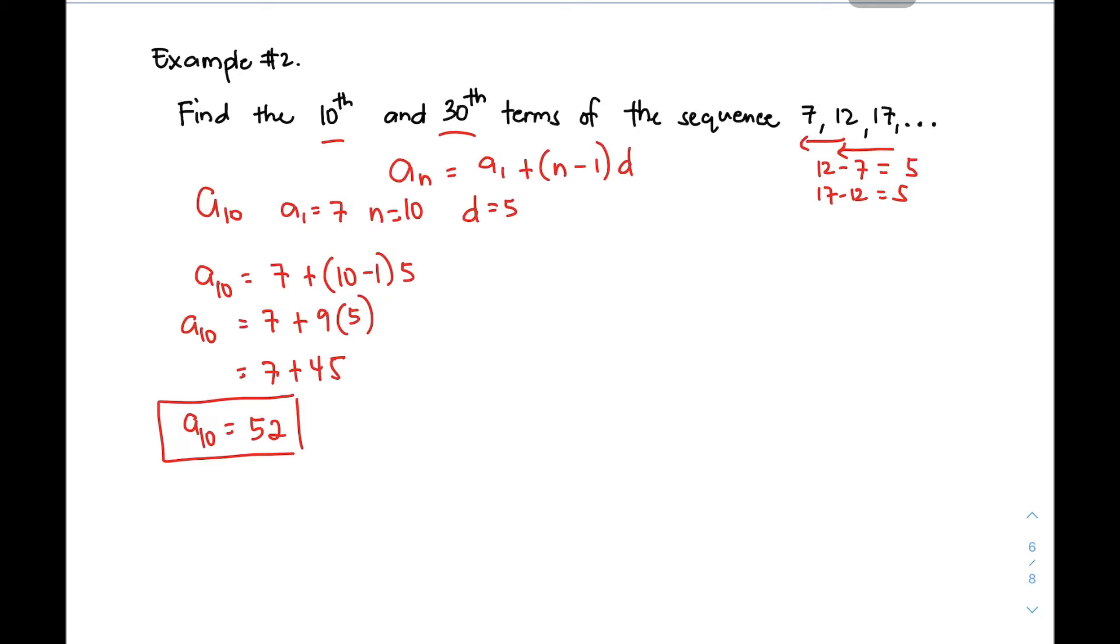This is the 10th term of the sequence 7, 12, and 17. What about the 30th term? Pinapahanap naman ngayon si a₃₀. Yung a₁ ay hindi naman gumago, it doesn't change because your first term is still 7. Ang gumago lang dito ay yung n which is 30 kasi 30th. Tapos, yung common difference is still the same, 5. So, use the formula a₃₀ = 7 + (30-1)(5).